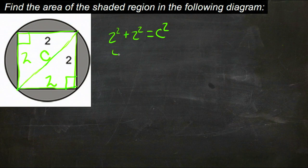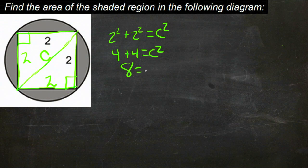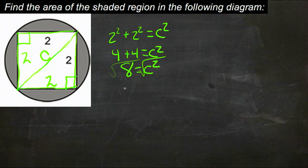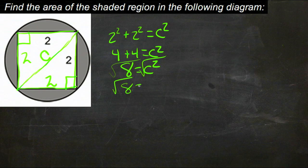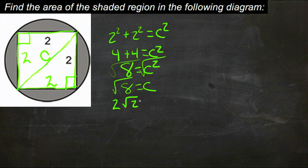Well, 2 squared is 4, so we have 4 plus 4 equals C squared. 8 equals C squared, take the square root of both sides, and we'll get the square root of 8 equals C. The square root of 8 simplifies to 2 root 2.